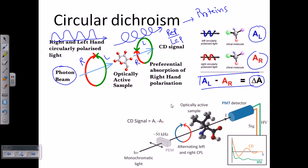Looking at the schematic diagram of the instrument, a monochromatic light source is used because we need only one particular wavelength. This monochromatic light passes through a polarizer and consists of both left-handed and right-handed circularly polarized light. It then passes through the optically active sample and is detected by a PMT detector.